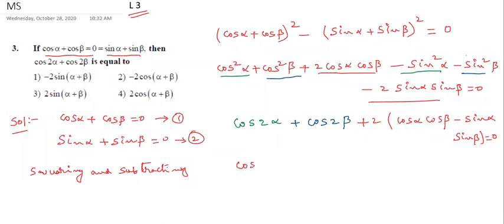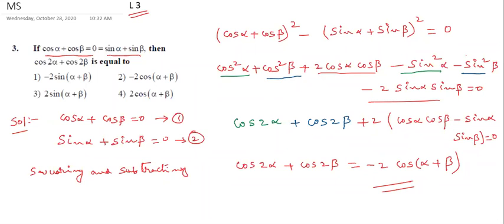Finally: cos 2α + cos 2β, and the remaining two terms give 2(cos α cos β − sin α sin β) = 2 cos(α + β). That is the final answer. Students, which option is correct? The second option is correct.